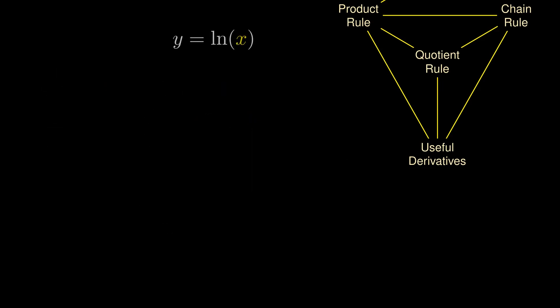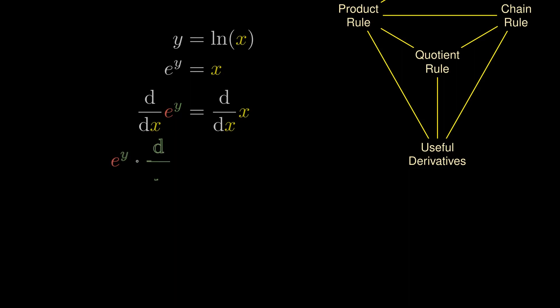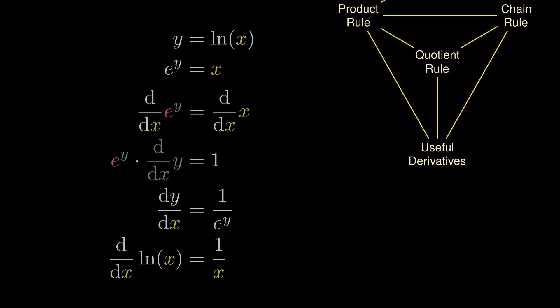We've seen the logarithm many times, but what is its derivative? While it might not be obvious how to find this derivative, a key trick is to get rid of the logarithm by applying the exponential on both sides. From this, we differentiate both sides with respect to x. The left-hand side is y inside the exponential, so we use the chain rule. But the exponential of y is simply x, and y is simply the logarithm of x. This helps us obtain the derivative of the logarithm, which equals 1 over x.